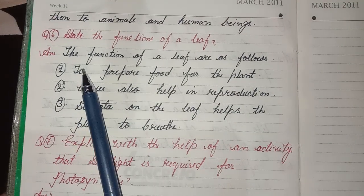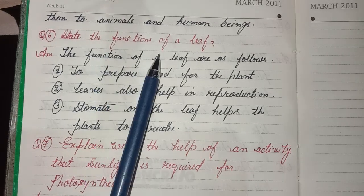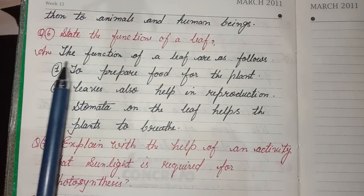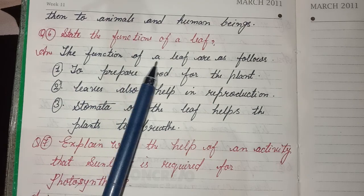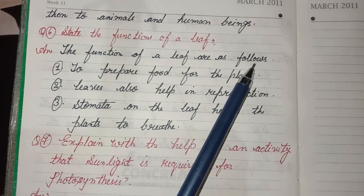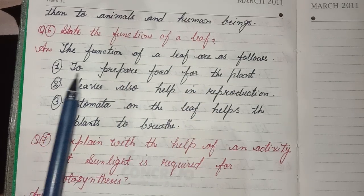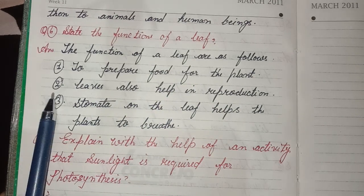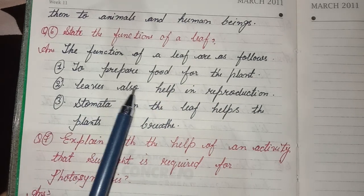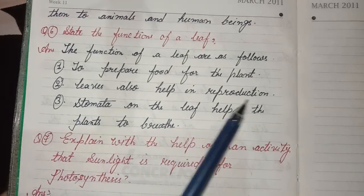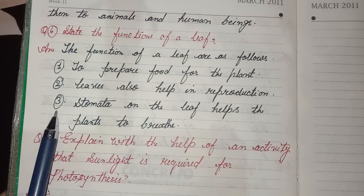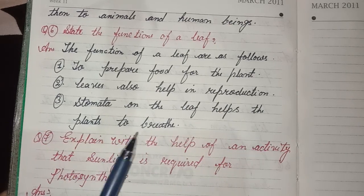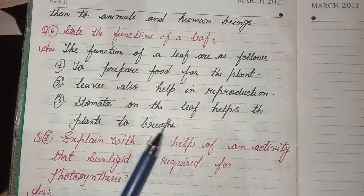Sixth question: State the functions of a leaf. Answer: The functions of a leaf are as follows — first, to prepare food for the plant; second, leaves also help in reproduction; third, stomata on the leaf help the plant to breathe.